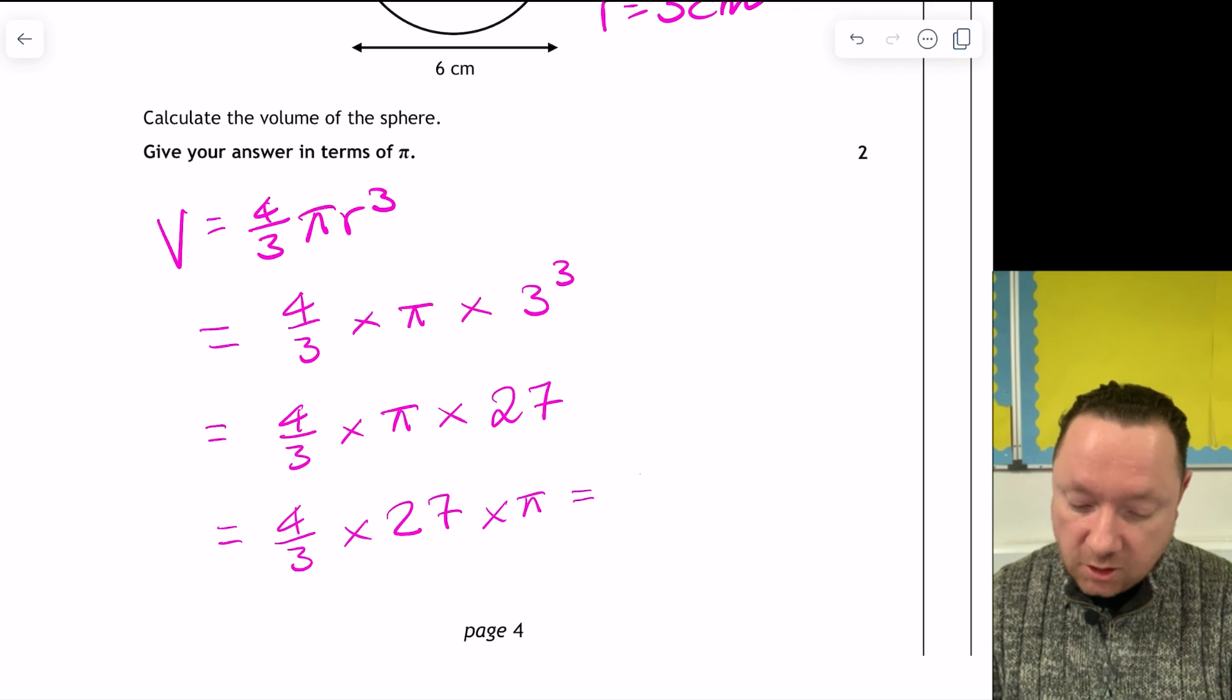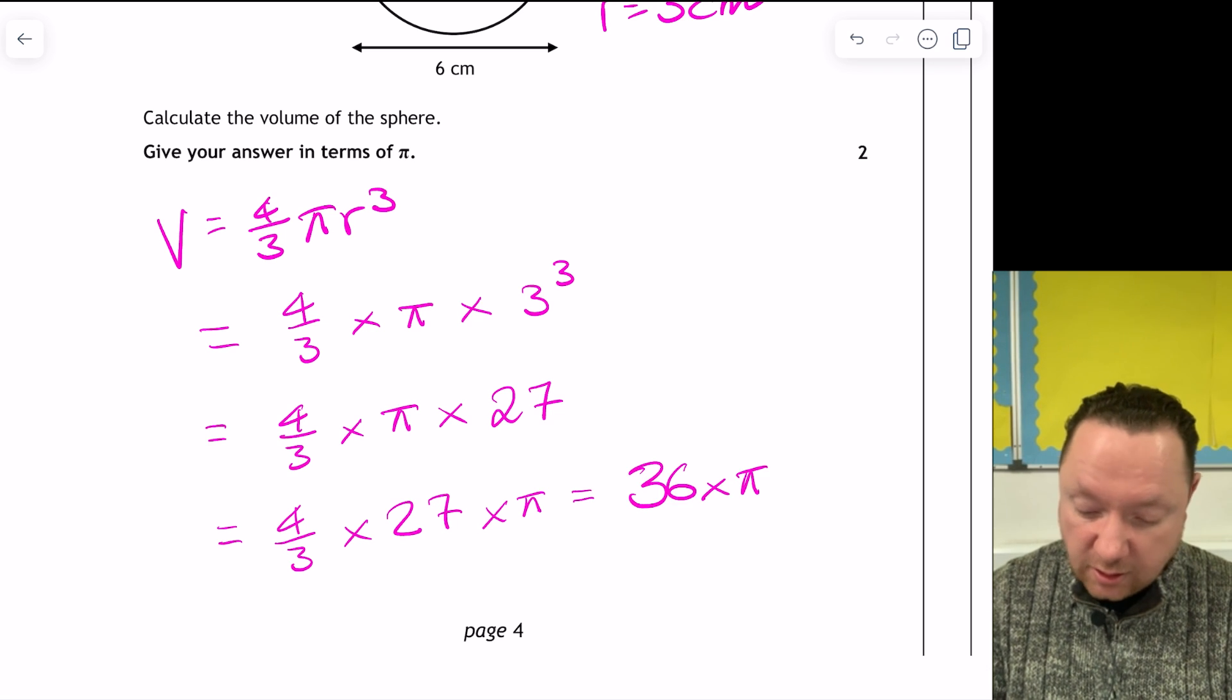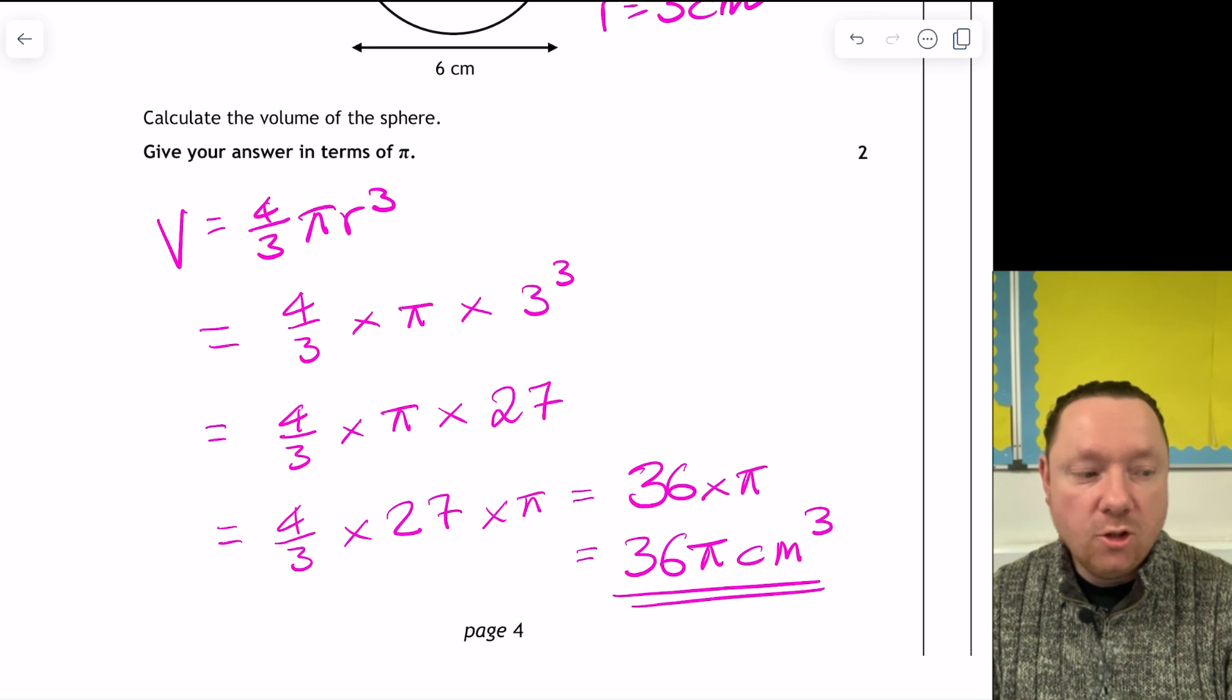Keeping the pi to the end, so I'm just going to divide by 3. So 4 thirds of 27 times pi. Divide by 3, 3 nines is 27. So I get 9 times 4, which is 36, times pi, 36 pi. And then put my units in, it's centimetres, and it's cubed because it's volume. 36 pi centimetres cubed.